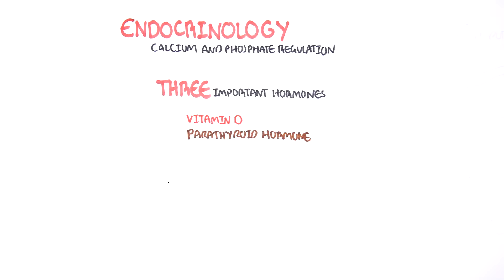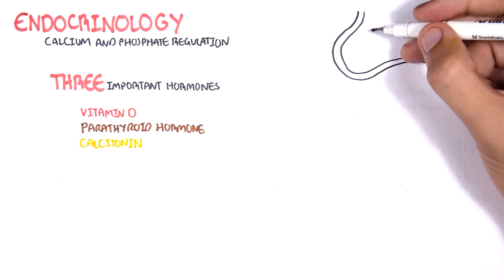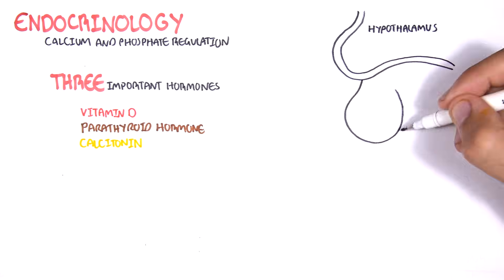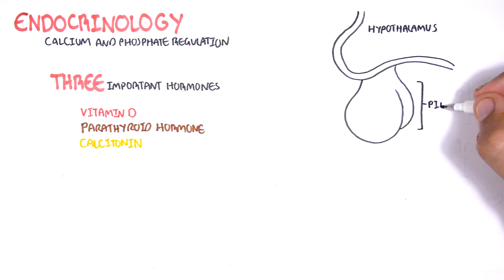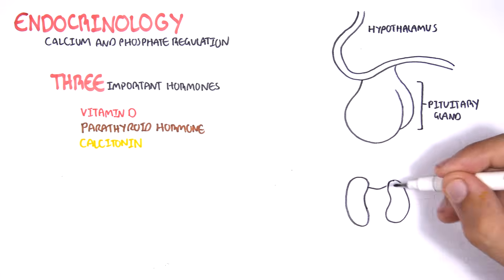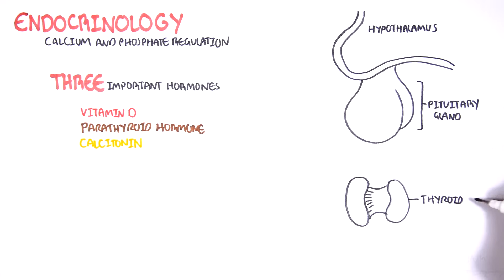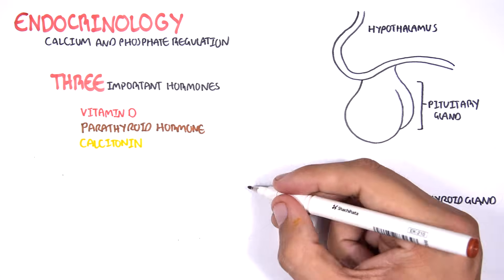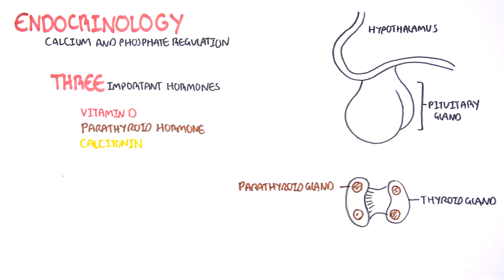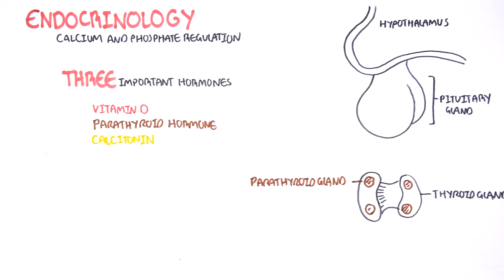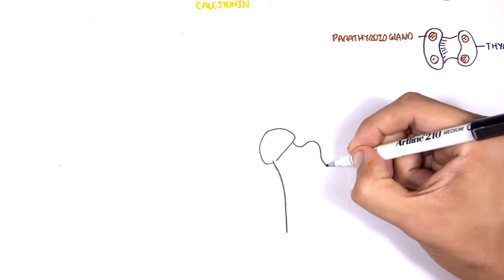Like all endocrine systems, we should look at what glands and tissues are involved. Here I'm drawing the brain where we have the hypothalamus and the pituitary gland, but we won't focus on these in this video. We will look at the thyroid gland, situated on the throat. This is a dorsal view — from the back — and at the back of the thyroid gland we find four additional glands called the parathyroid glands.